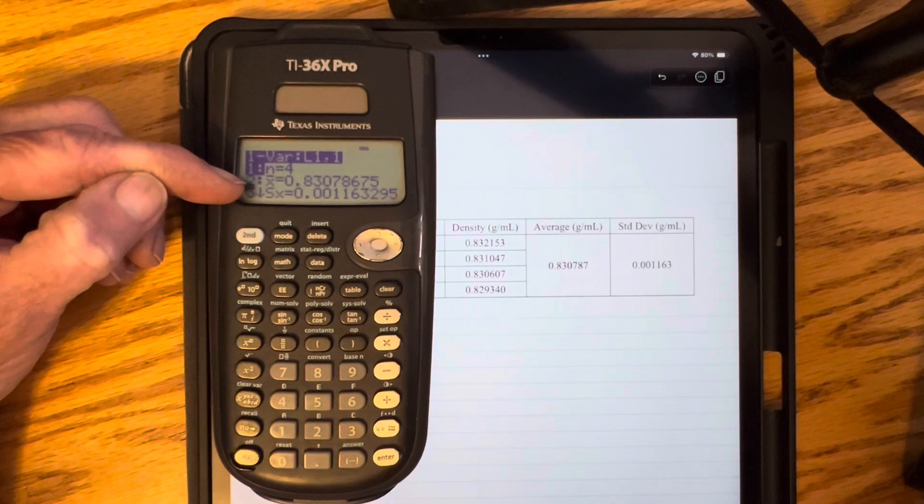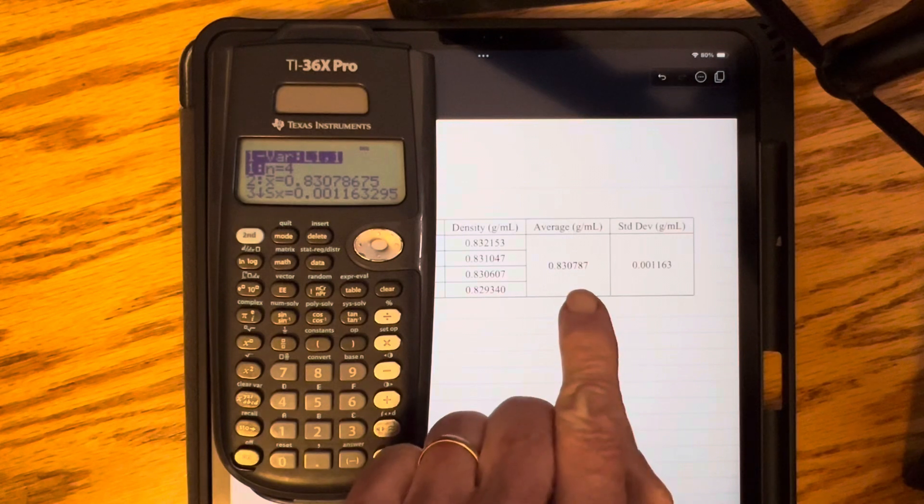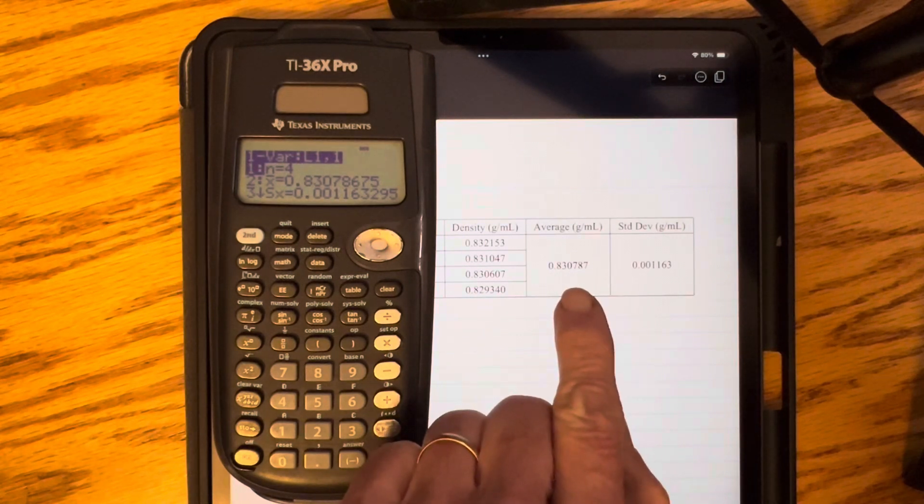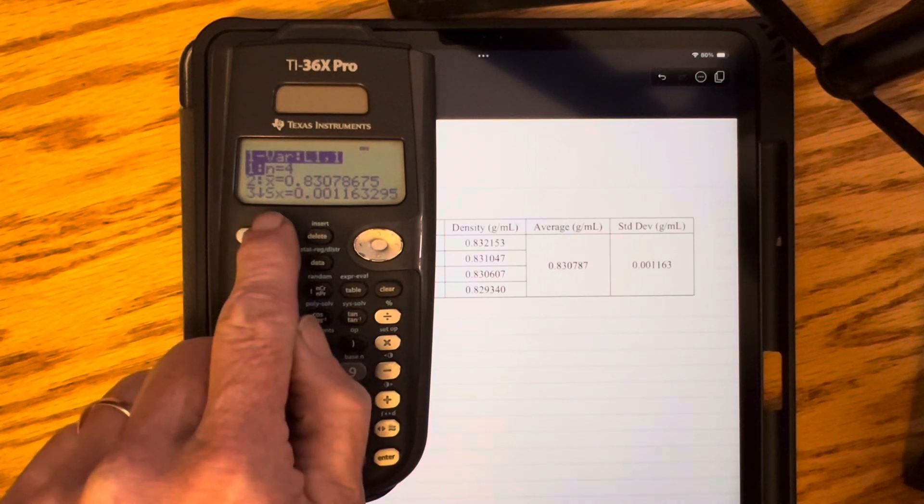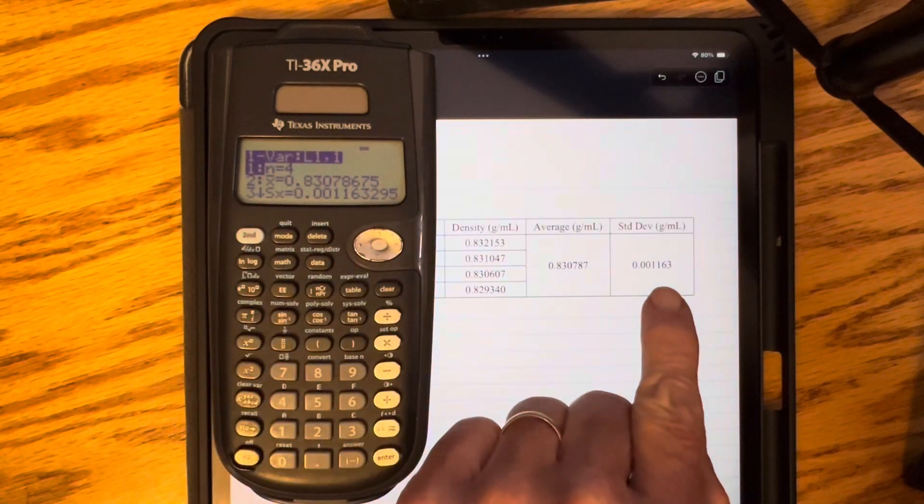And you see that over here, that has been rounded a little bit, but it's the same number. And then s of x is the standard deviation that we want, and there it is, matching up here.